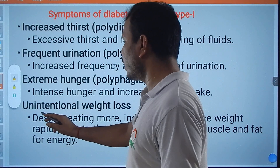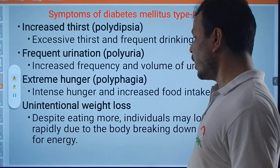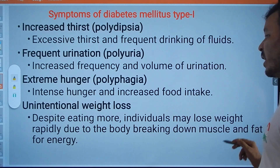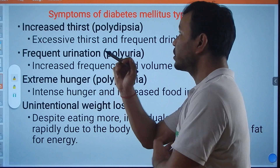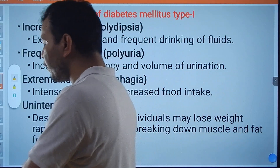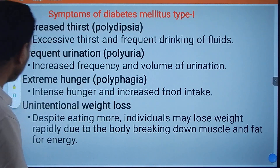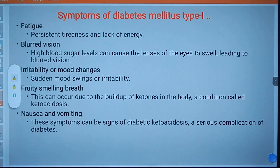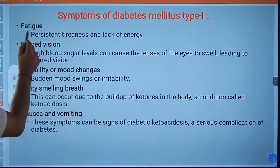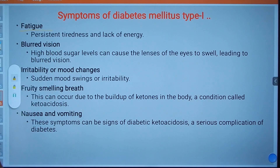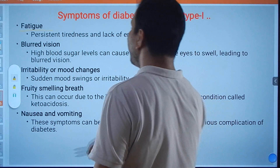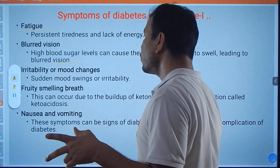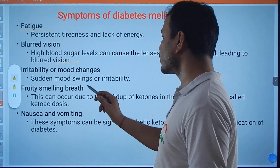There is extreme hunger, known as polyphagia — intense hunger and increased food intake. There is also unintentional weight loss: despite eating more, individuals may lose weight rapidly due to the body breaking down muscle and fat for energy. Fatigue is another symptom — persistent tiredness and lack of energy. Blurred vision can also occur, as high blood sugar levels can cause the lenses of the eye to swell.